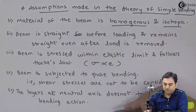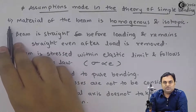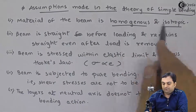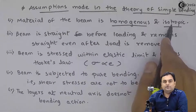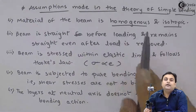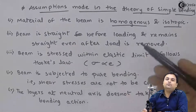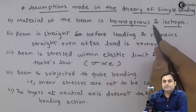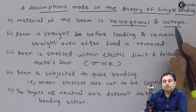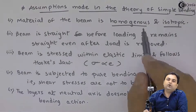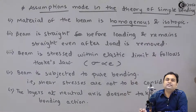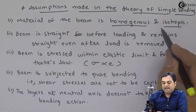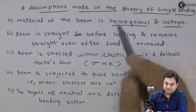To summarize: the first assumption was that the material of the beam is homogenous and isotropic. Homogenous means same composition of material throughout. Isotropic means the modulus of elasticity in all directions — X, Y, and Z — will be the same.